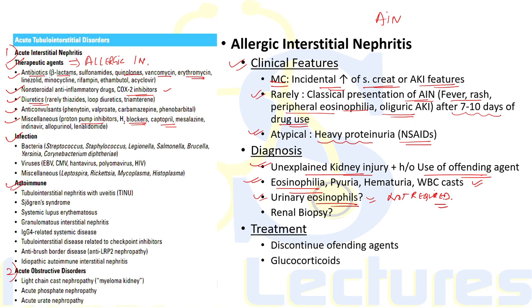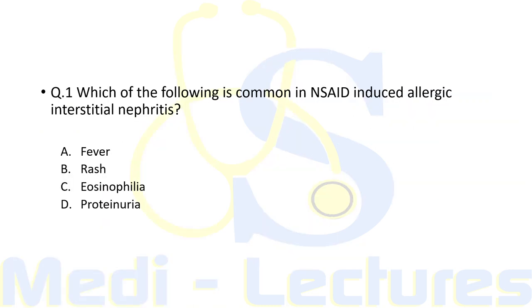Renal biopsy is also generally not required, as it reveals extensive interstitial and tubular infiltrates of WBCs, which is usually non-specific. For treatment, first discontinue the offending agent. The role of glucocorticoids is to accelerate kidney recovery, but they do not impact long-term renal survival.